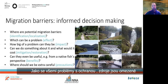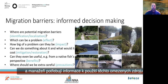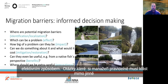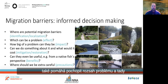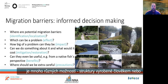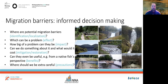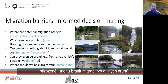As with all conservation problems, resources to address them are limited, and managers need information to apply those limited resources in an efficient way. Questions managers regularly need to answer include: where are potential migration barriers or hindrances? Localizing them also helps to understand the extent of the problem. There are a lot of different structures, both man-made and natural, that can hamper fish and other species migration or dispersal.